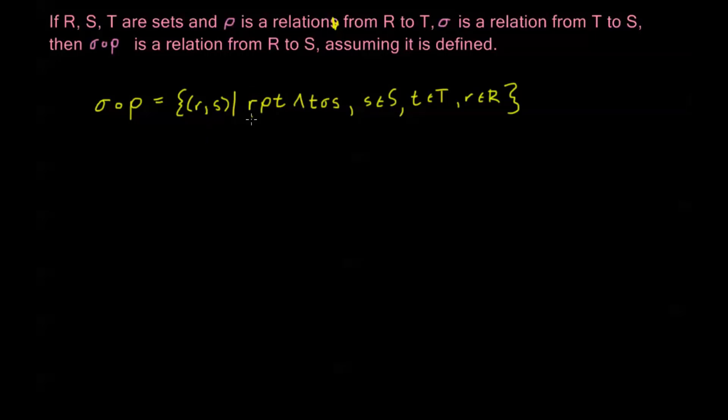Now again, we'll have some examples of this in our examples video, but one important property of composition is that composition is associative. That is, let's say I have these three relations α, β, and γ.